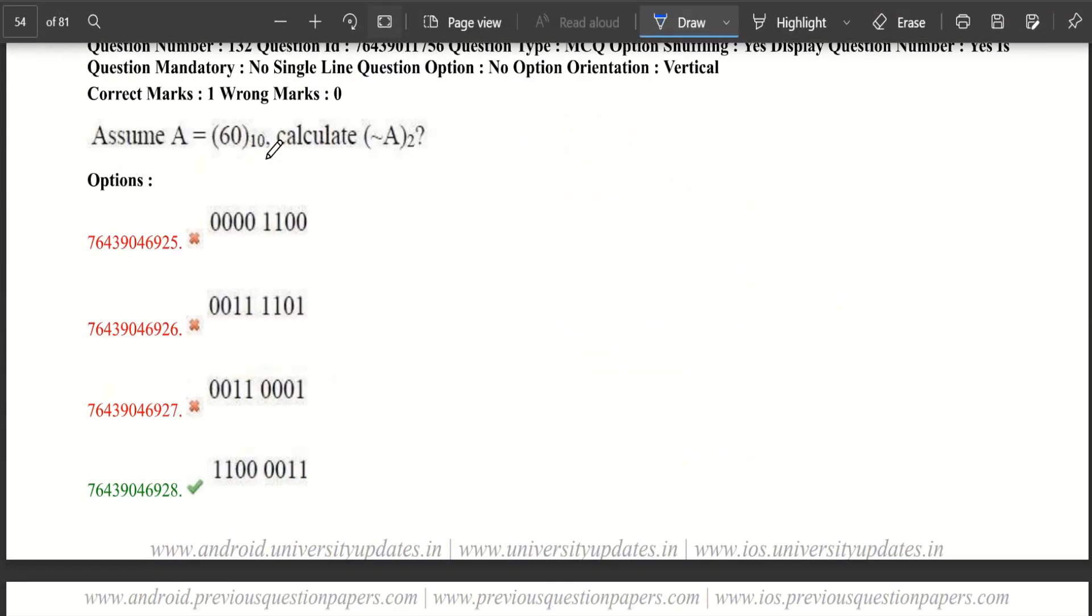Now let's move to our final question. Assume A equals to 60 decimal value, calculate A tilde of binary. It is a very simple and tricky equation. We are given A equals to 60 and asked to calculate A complement in binary. This tilde symbol represents the complement operation.